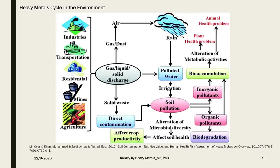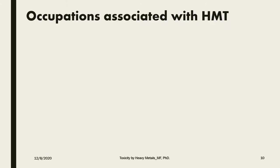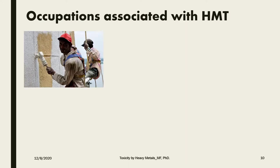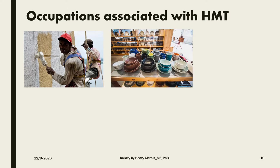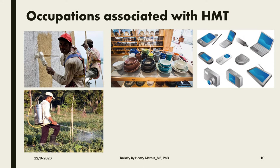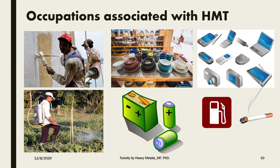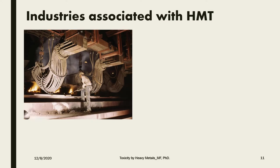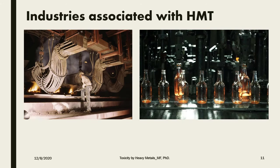This graph shows how heavy metals cycle in the environment from environmental exposure. Common occupations associated with heavy metal toxicity include painters and pottery manufacturing, digital electronics manufacturing, pesticides and farming, battery manufacturing, and combustion of fossil fuels such as air pollution and smoking. Other examples include smelters working in steel factories and glass manufacturing facilities.